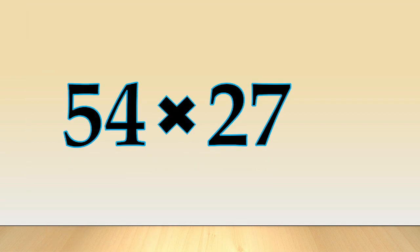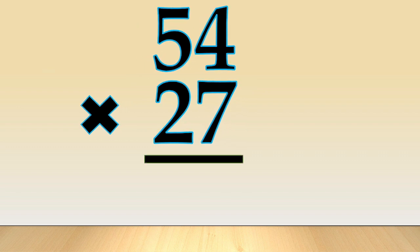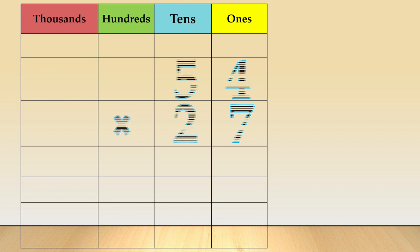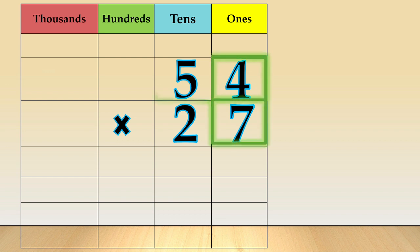Another example: 54 times 27. First, arrange the numbers in columns like this. Place the digit of the number in a column based on its place value. Next, we multiply by the ones place. We are going to multiply 54 times 7 — just ignore the 2.